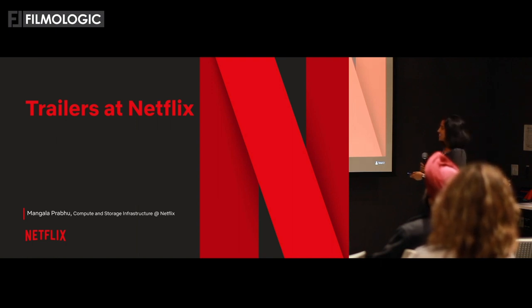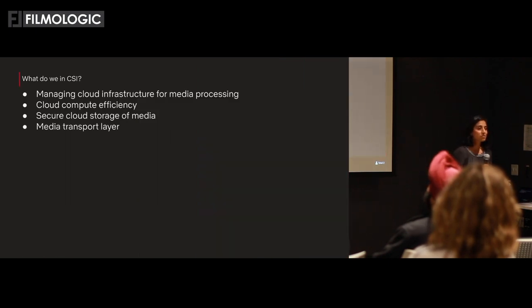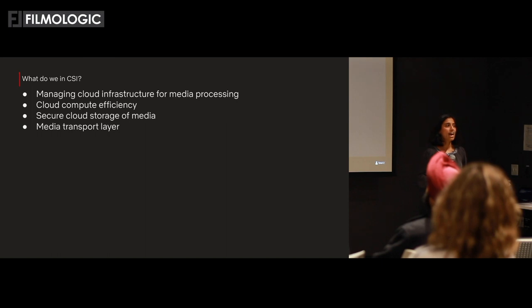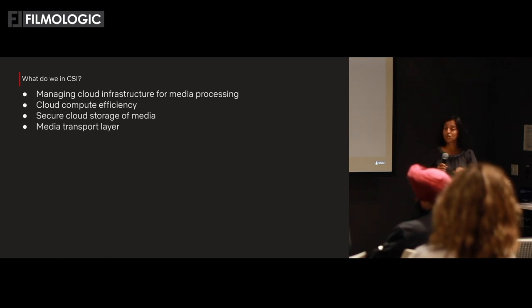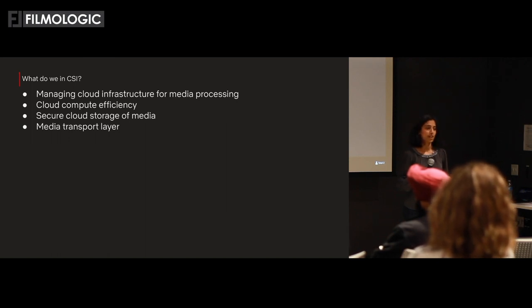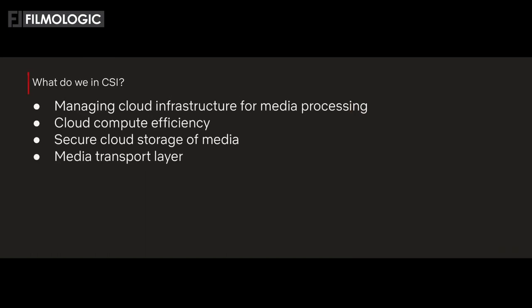What do we do at CSI? We manage the cloud infrastructure for media processing. We have cloud instances provisioned in a farm so we can run every piece of media that comes into our system and make it viewable. Any device you use has gone through our encoding farms. If you're a video engineer with a new codec or algorithm you want to test, we have all that sorted out so you can focus on testing.